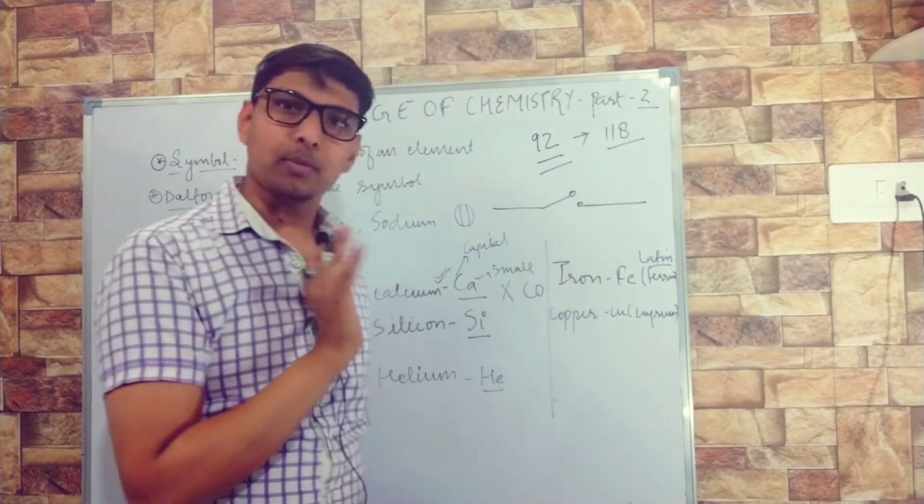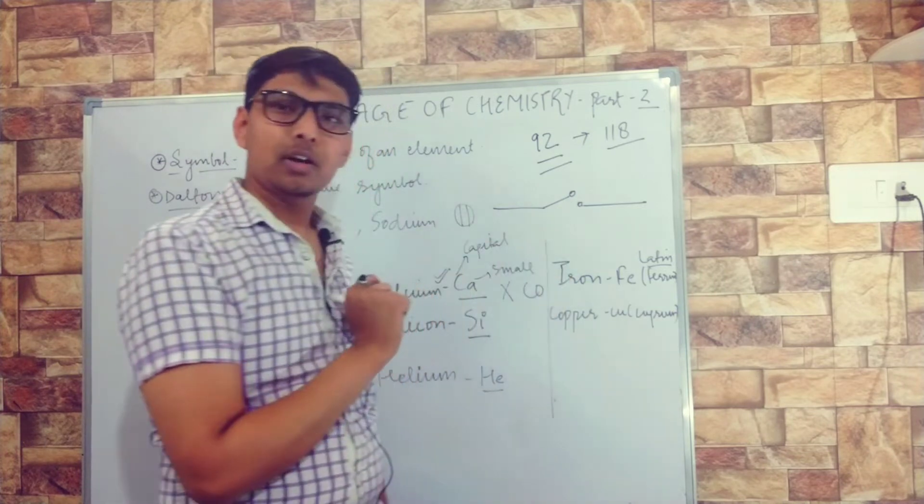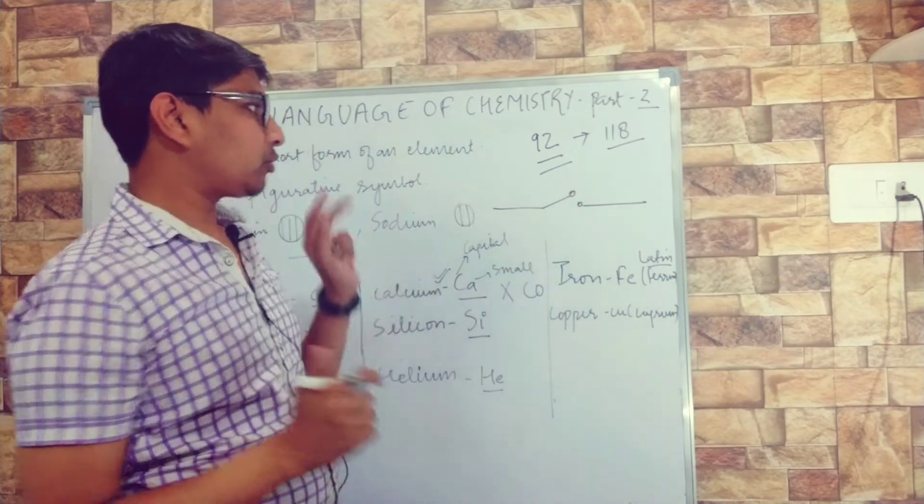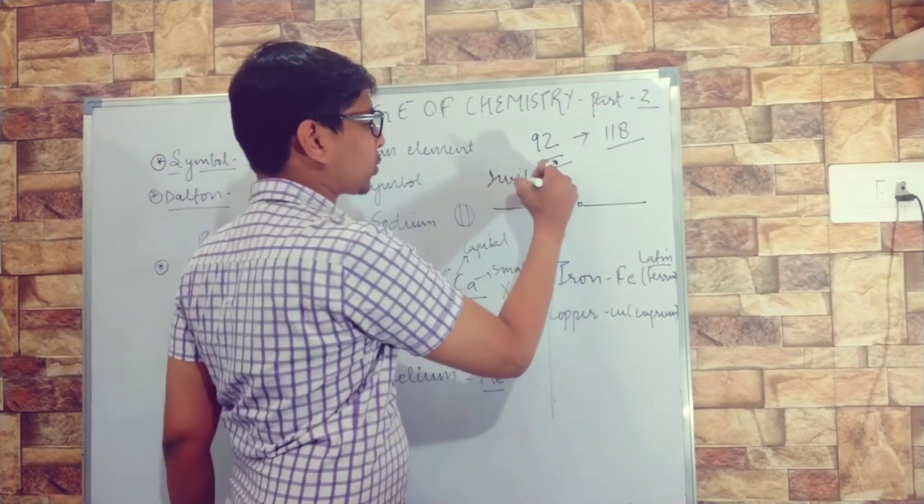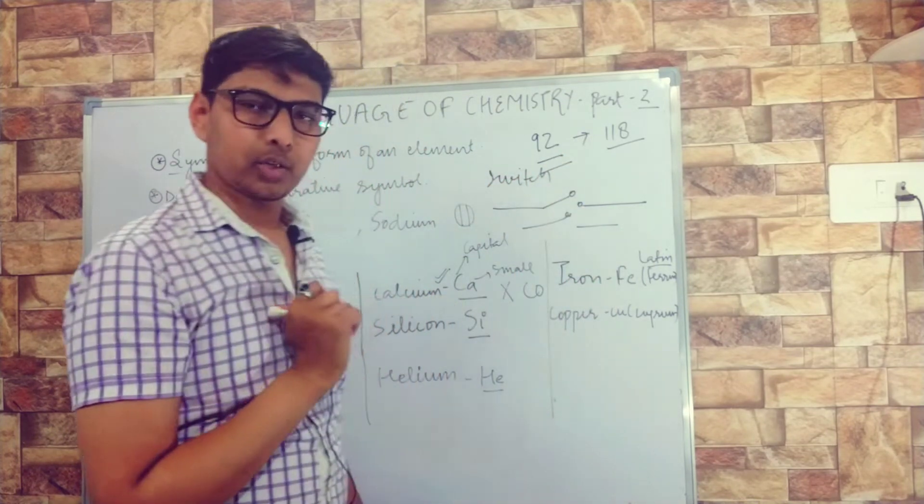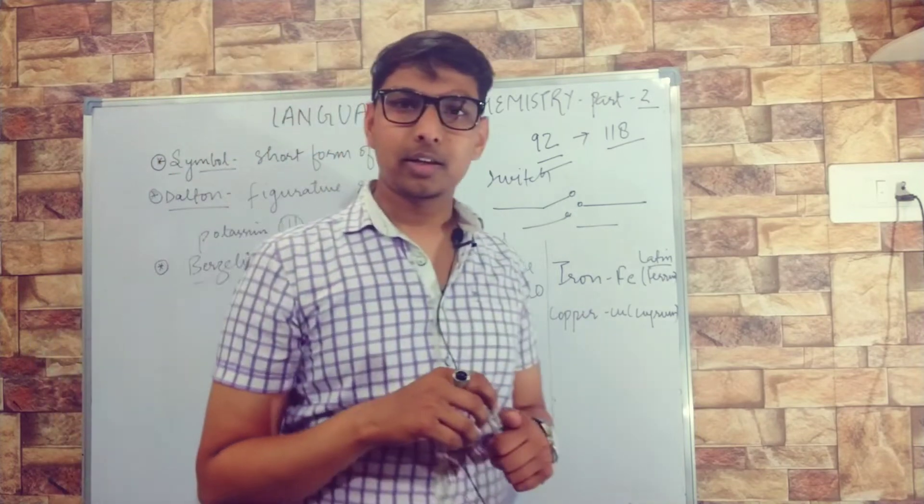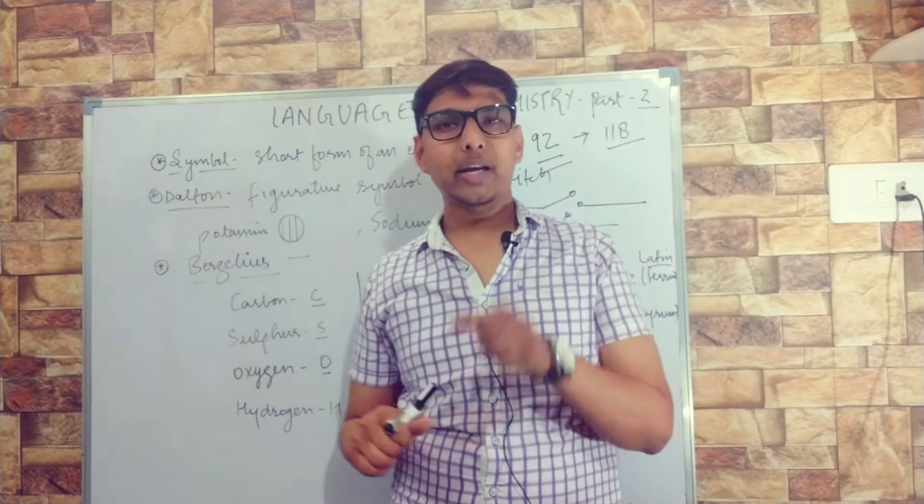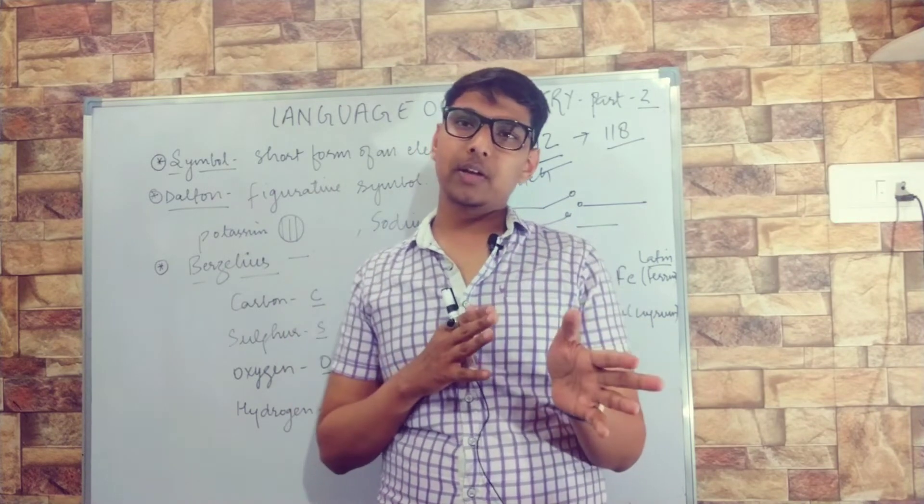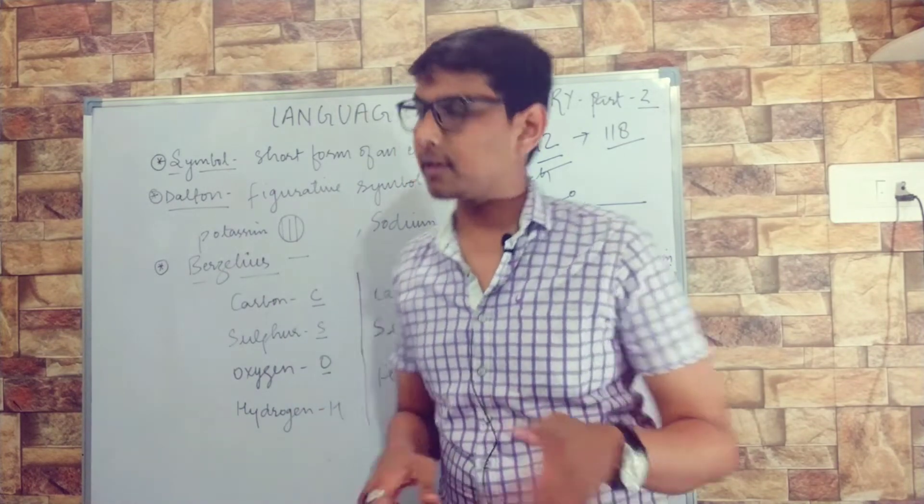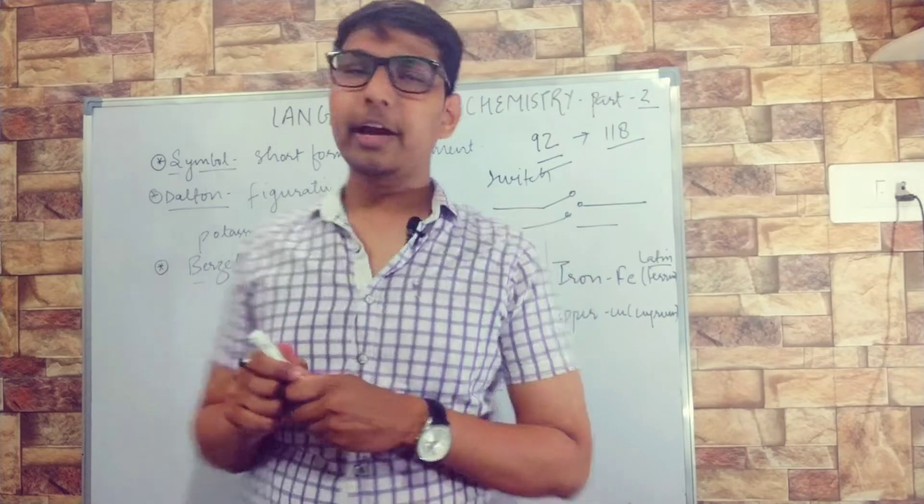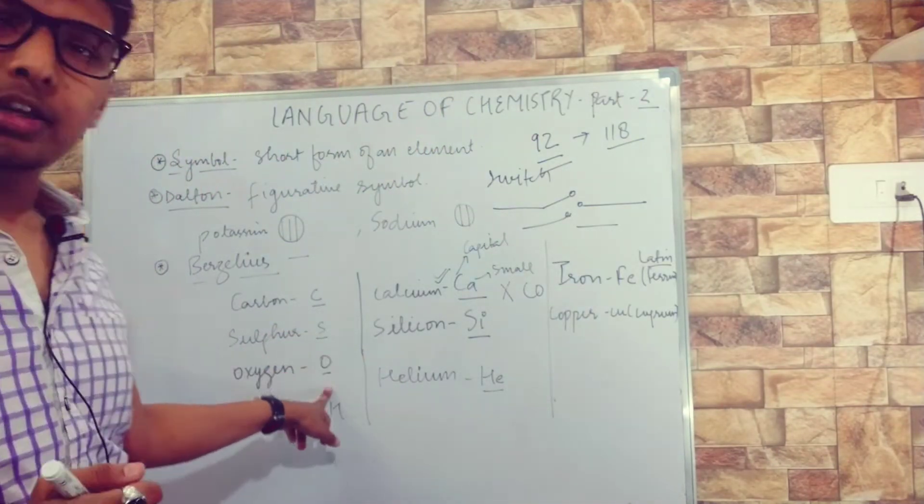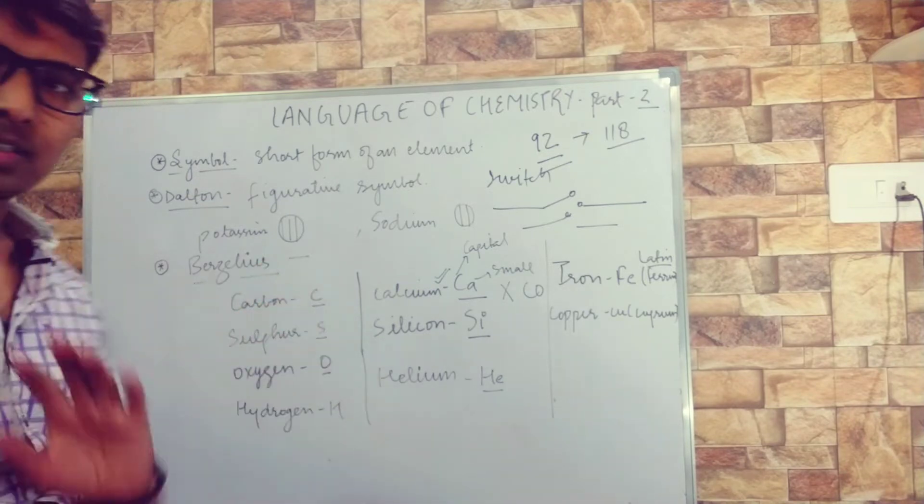This is a symbol of a switch - without writing the full word 'switch,' we can simply use this symbol. It's easier and not time-consuming. Similarly, in chemistry we write symbols instead of writing the entire name of an atom or element - like for hydrogen we write H, carbon we write C, sulfur we write S, oxygen we write O.